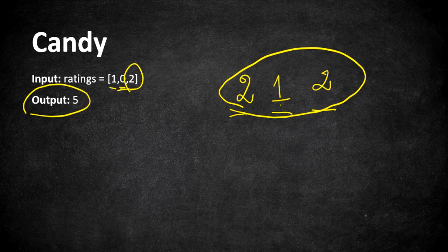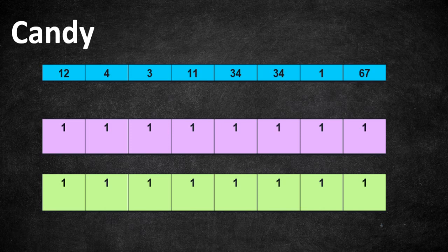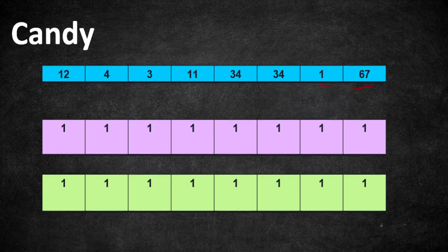We are going to use the same logic as most of our coin change and similar DP problems. Consider this example with ratings starting from 1 up to 67. We are going to have two arrays — left and right. The left array is filled based on each child's left neighbor, and the right array is filled based on each child's right neighbor. Overall, we take the max of both arrays for each position and calculate the sum.